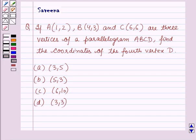The options are: option A (3,5), option B (5,3), option C (6,10), and option D (3,3).